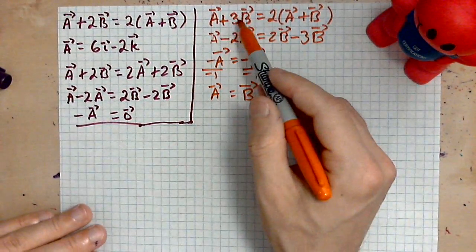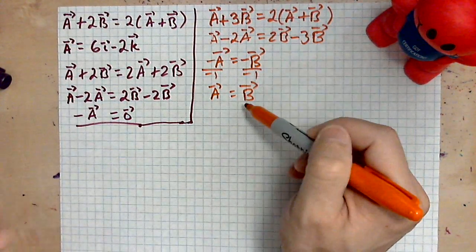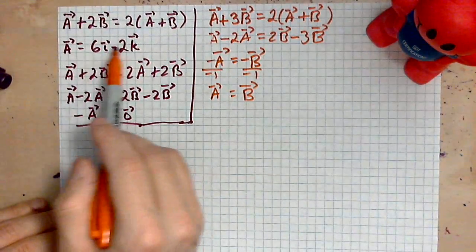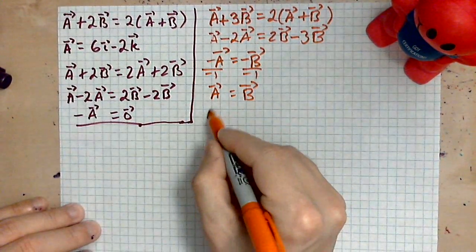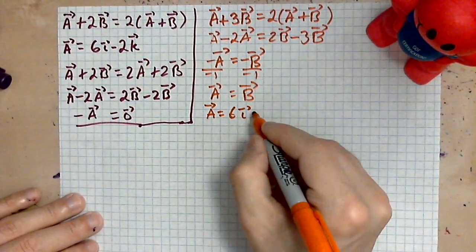If you want the equation a plus 3b to be equal to the equation 2 times (a plus b), the vector b has to be equal to the vector a. So if you take the a as we defined it previously, meaning a is 6i minus 2k, then we can check.